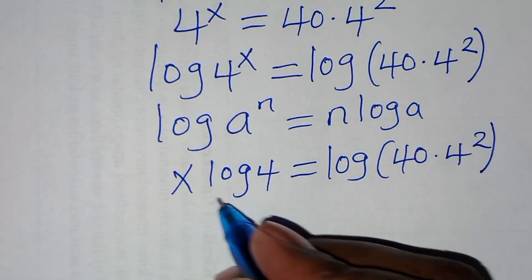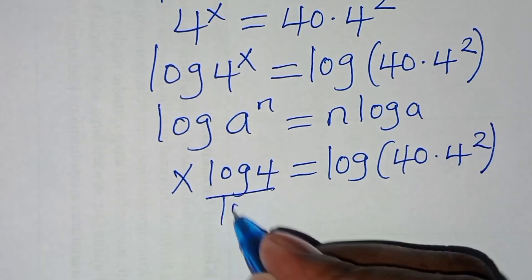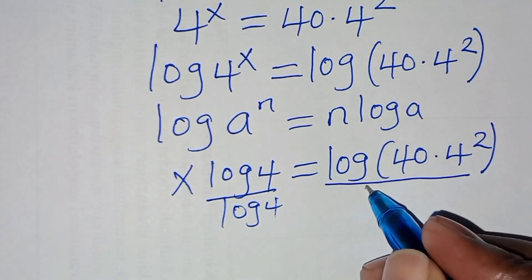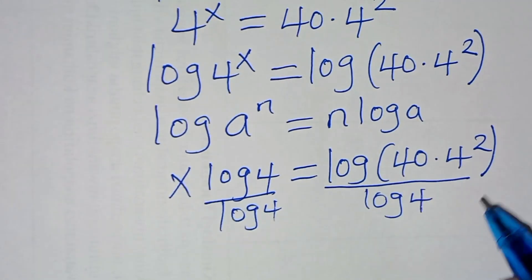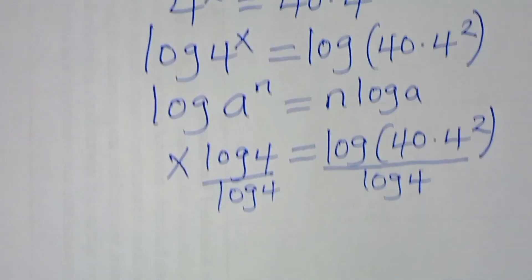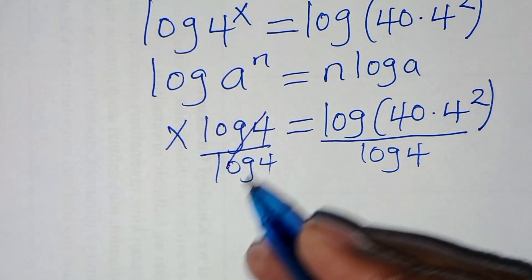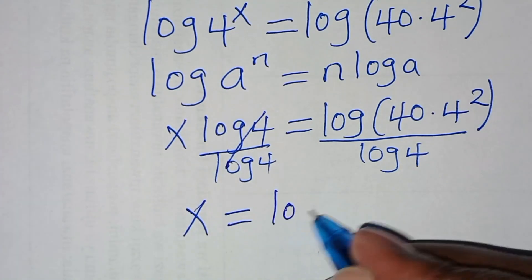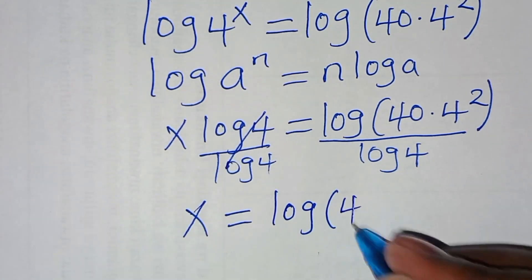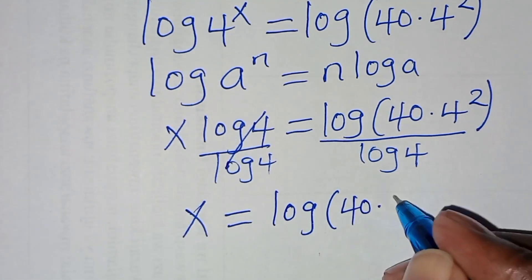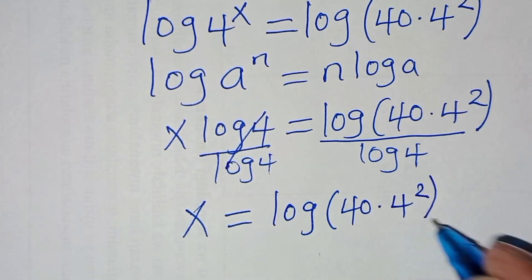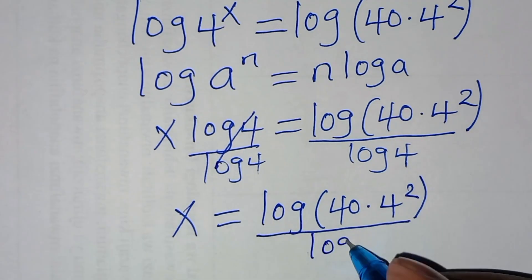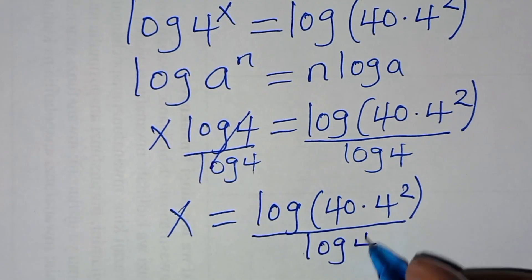So let's divide both sides by log 4. If we simplify, we'll have x is equal to log of 40 times 4 squared, divided by log 4.